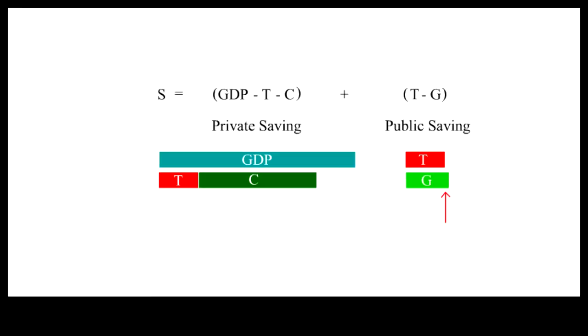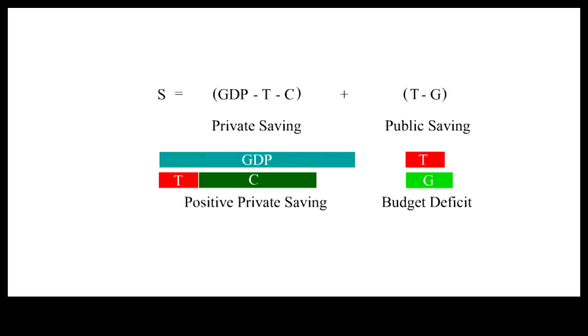If government spending expands while taxes remain unchanged, a budget deficit results. Private saving stays the same because taxes and consumption remain unchanged. The total saving is reduced by the budget deficit.